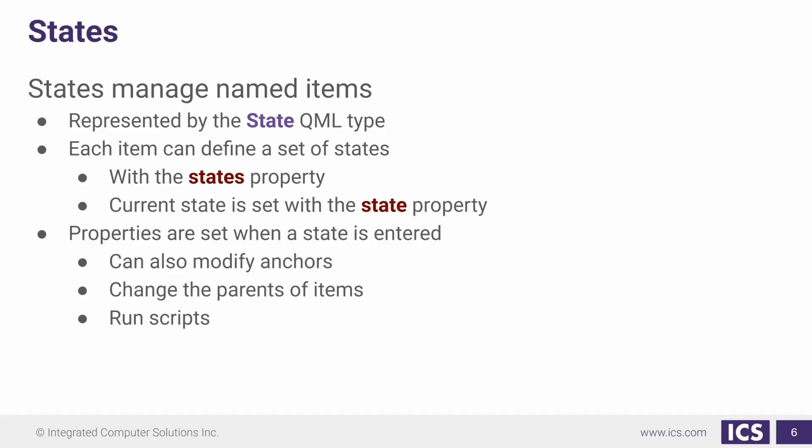Each QML object has a property called state, which determines what the state of the object currently is. It also has a collection of states. The collection of states is represented by an array of the QML type state. Each state item can modify a targeted item's properties and run scripts. Each of these state items in the collection has a property name, that's a string, that allows us to tell the state property what state we're in.